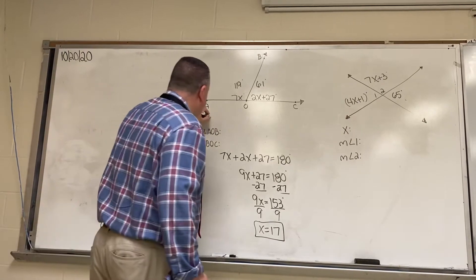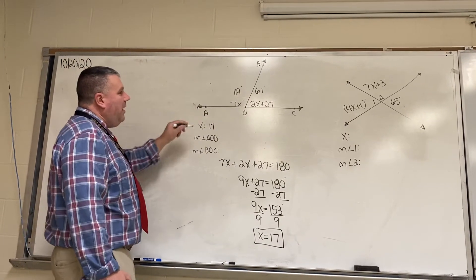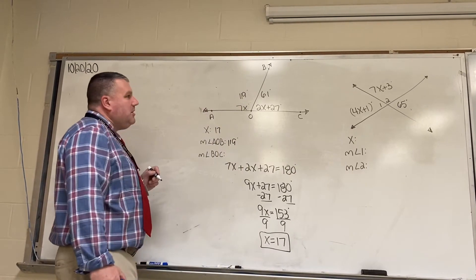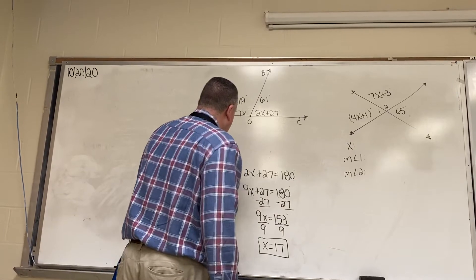So, our x is 17. The measurement of angle AOB is 119 degrees. And, the measurement of angle BOC is 61 degrees. This checks out.